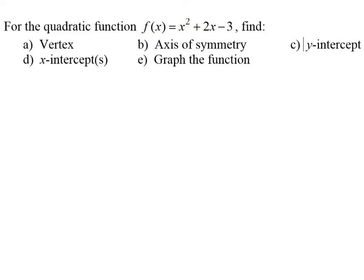For the quadratic function f of x equals x squared plus 2x minus 3, find the following information: the vertex, axis of symmetry, y-intercept, x-intercepts, and then we want to take a look at the graph of this function.